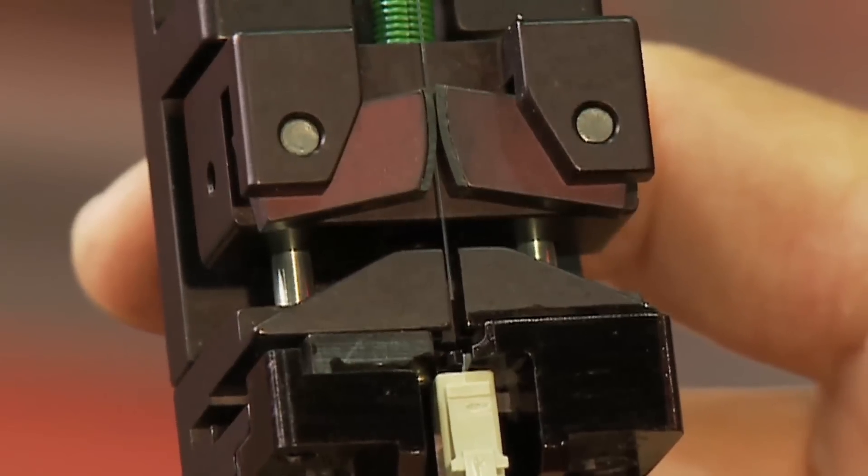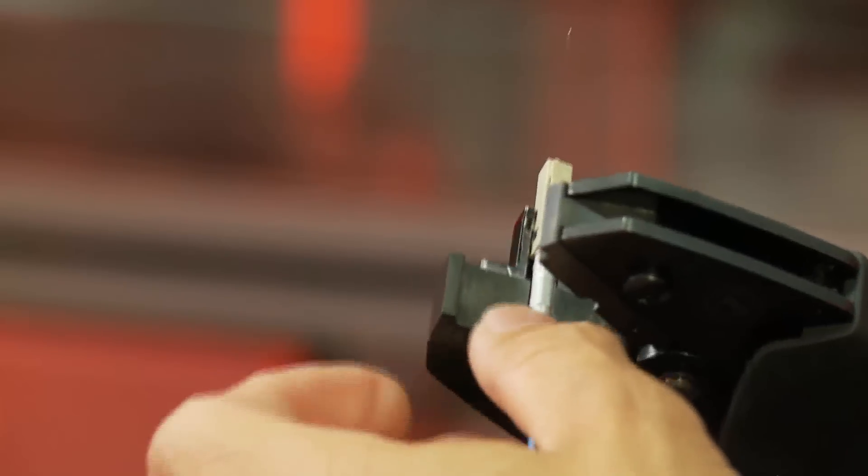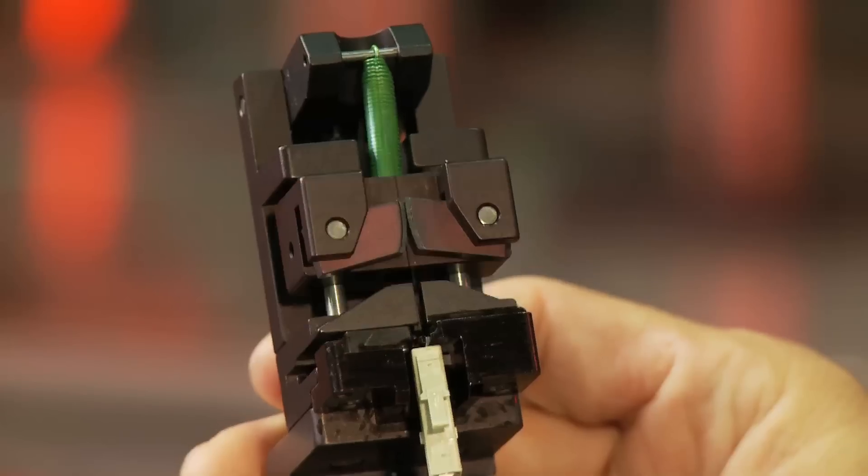Gently depress the trigger. Let the cleave tool do the work. Just crimp, cleave, and leave.